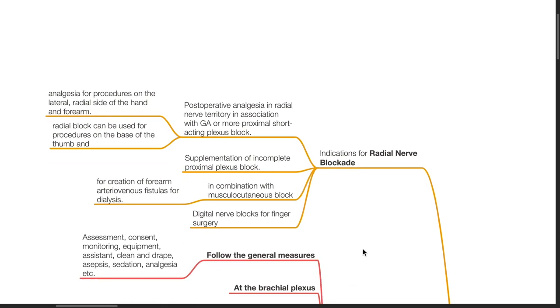Indications for radial nerve blockade include post-operative analgesia in radial nerve territory, surgery in association with general anesthesia or more proximal short-acting plexus block, analgesia for procedures on the lateral radial side of the hand and forearm. Radial block can be used for procedures on the base of the thumb. Supplementation of incomplete proximal block in combination with musculocutaneous block for creation of forearm arteriovenous fistulas for dialysis. Digital nerve blocks for finger surgery.